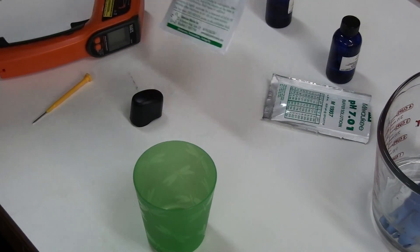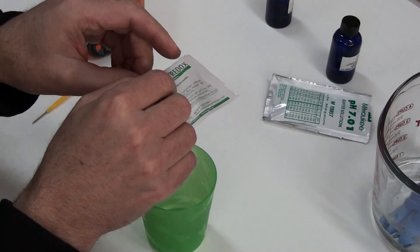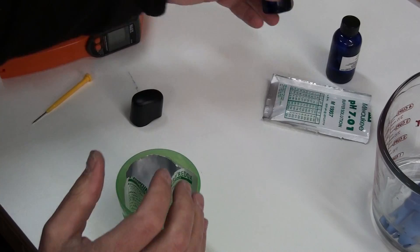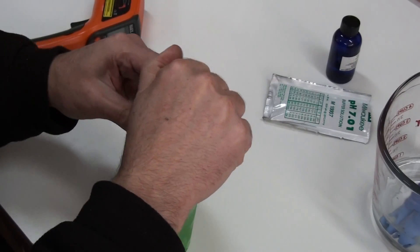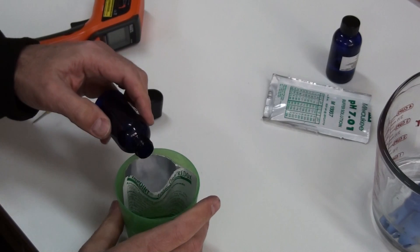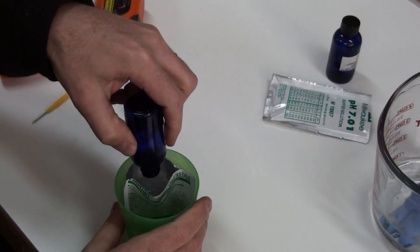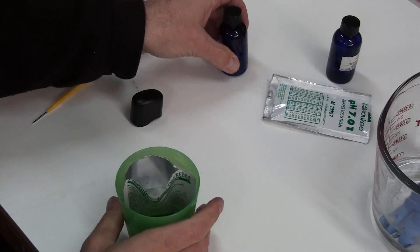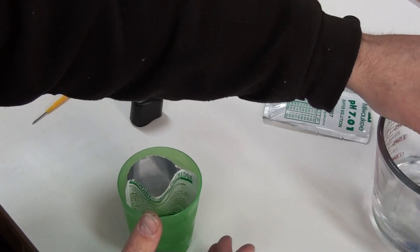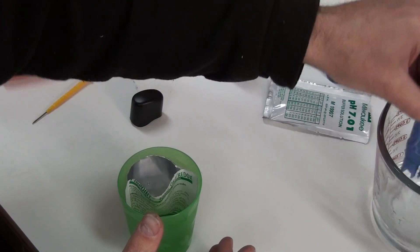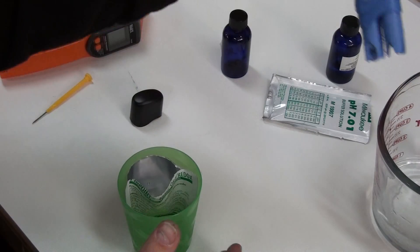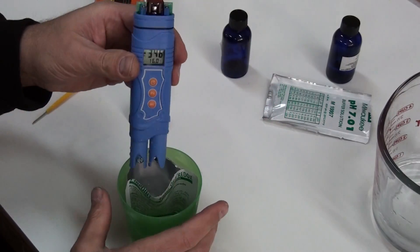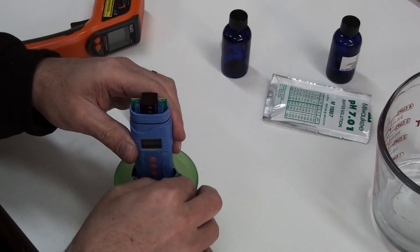All right, next I'll do the ORP. We'll do this the same way. Take the 400 millivolt solution. Pour it into the packet here. All right. Okay, we'll switch our meter over to the ORP scale. Stick it down into the solution.